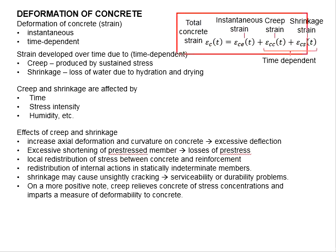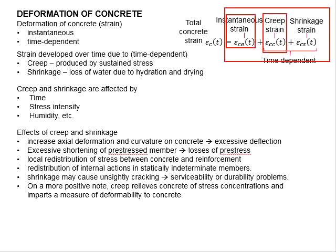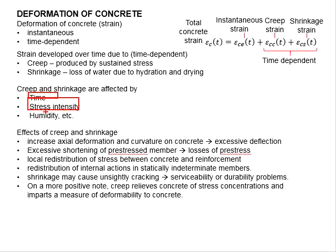These equations represent the total strain of the concrete, which is the summation of the instantaneous strain plus the creep and shrinkage strain. The creep and shrinkage are affected by three factors: time, stress intensity, and humidity.